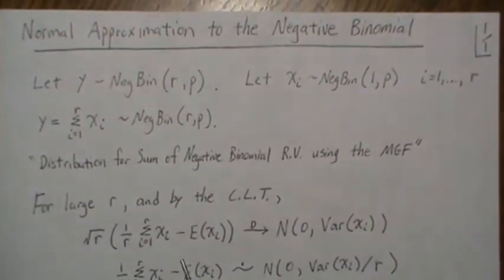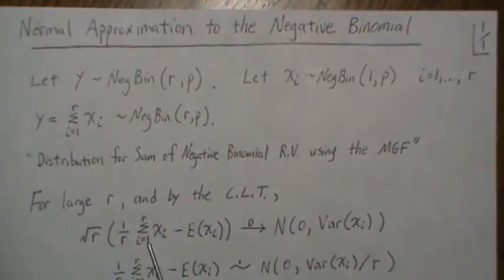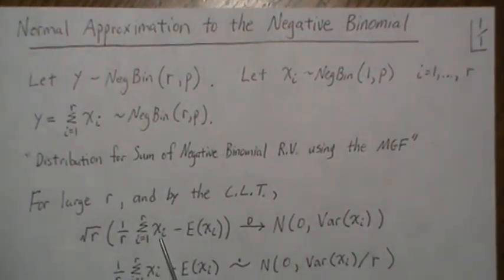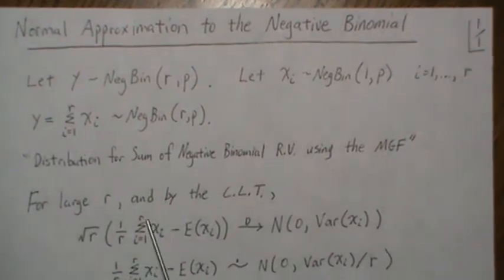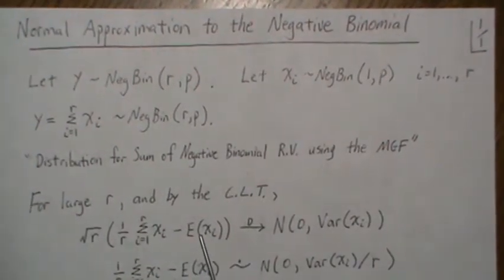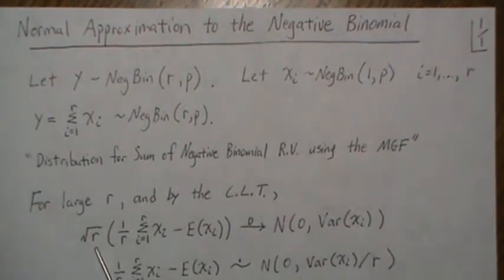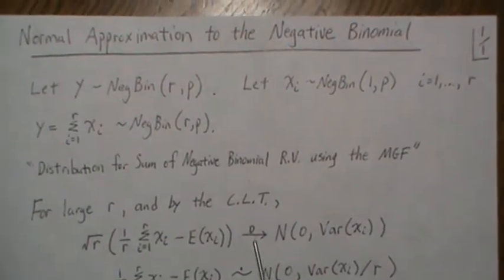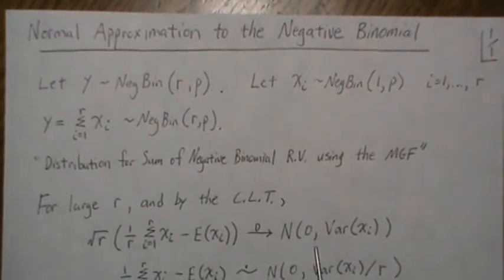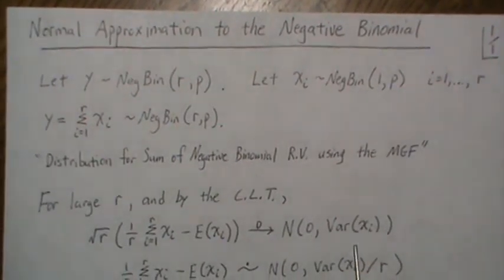Now this first step here, so it's the sum of the Xi divided by r minus its expected value times the square root of r. As r goes to infinity, it limits in distribution to a normal random variable zero and then variance of Xi.